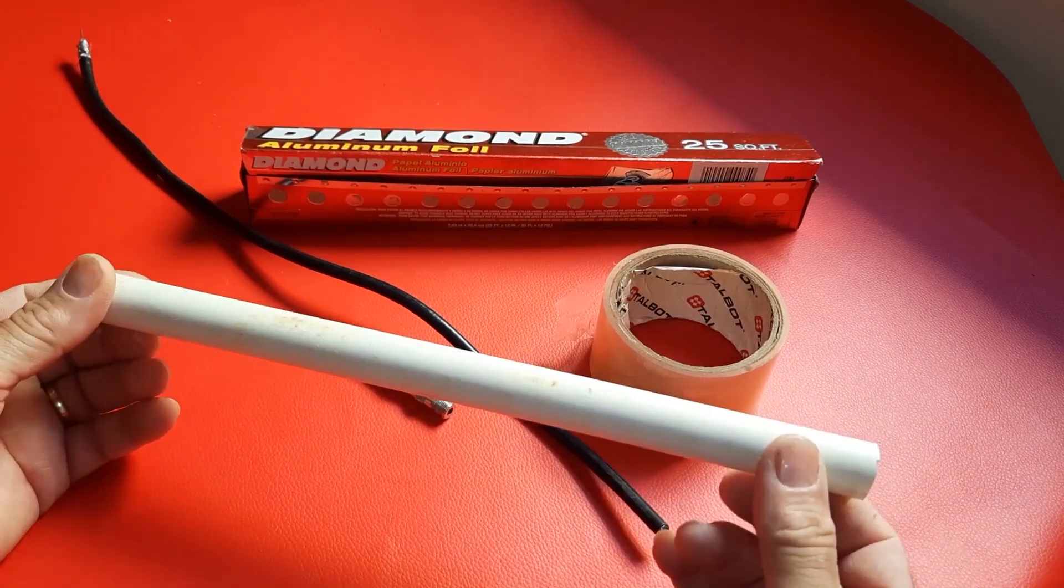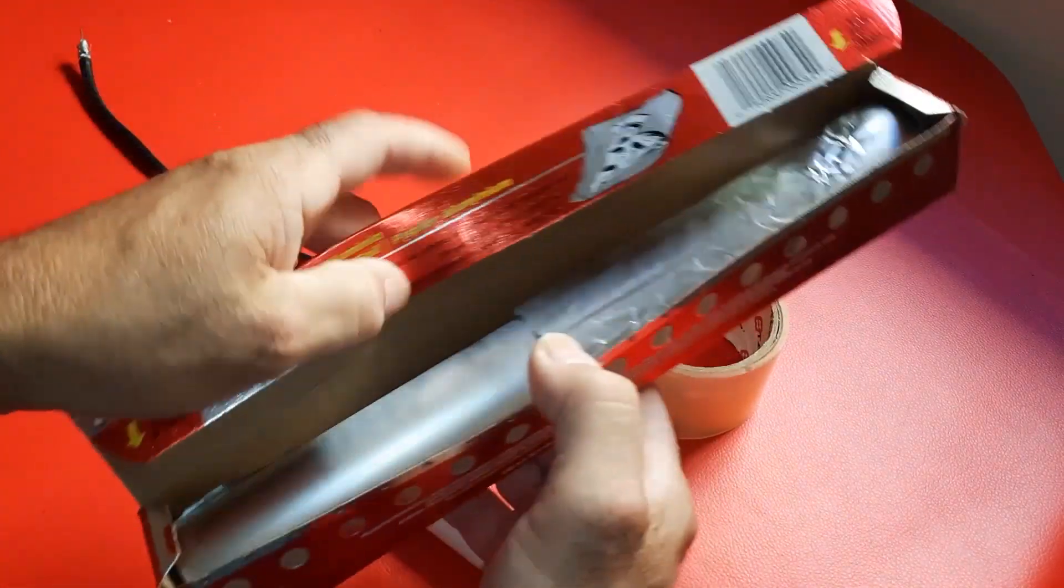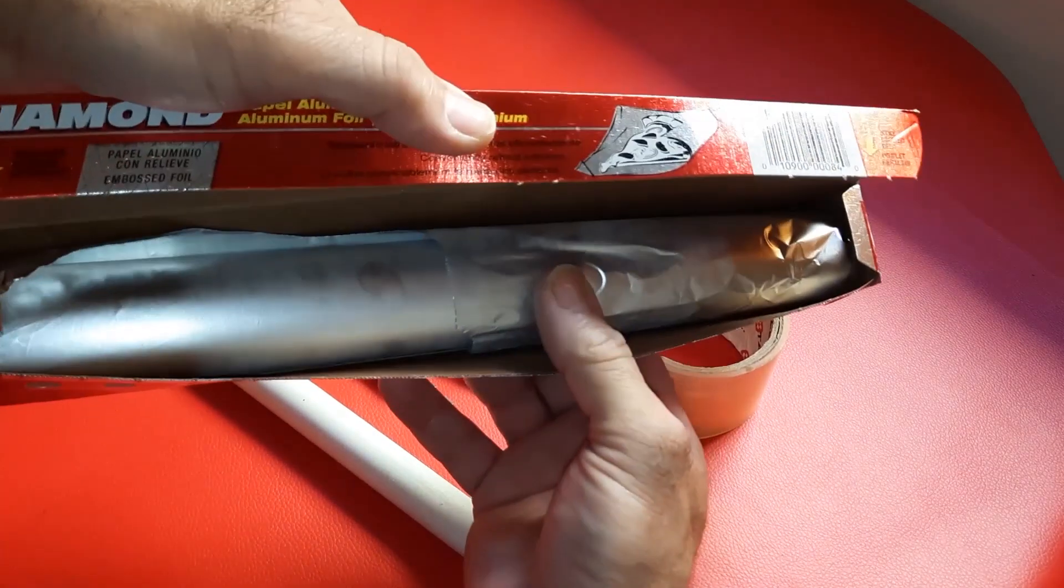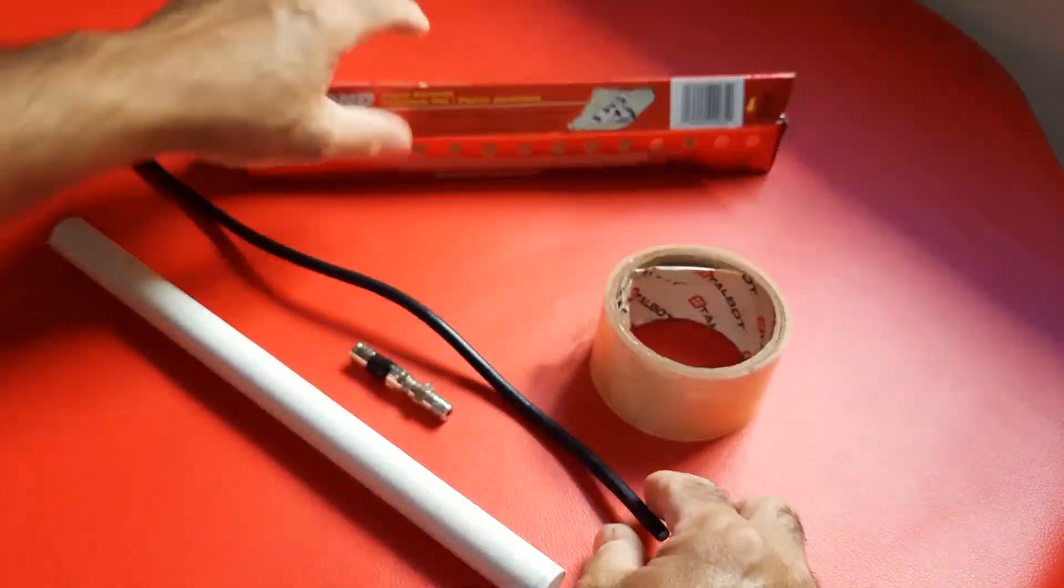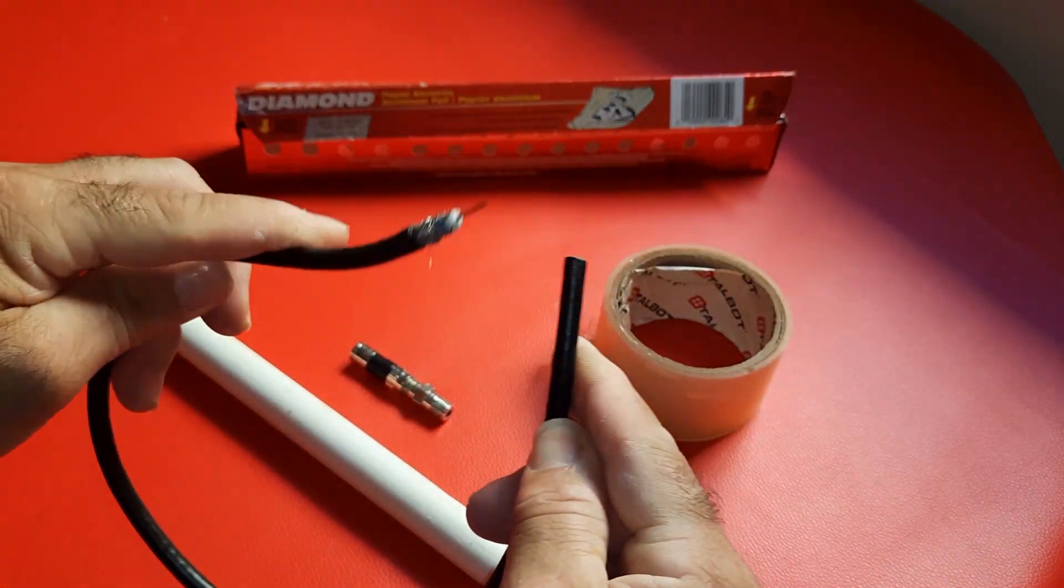The materials you will need are simple and readily available. Twelve inches of half-inch diameter PVC pipe, aluminum foil, adhesive tape, and a coaxial cable with its respective connector.